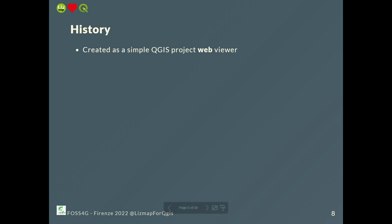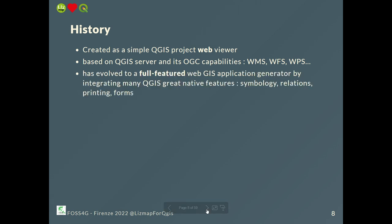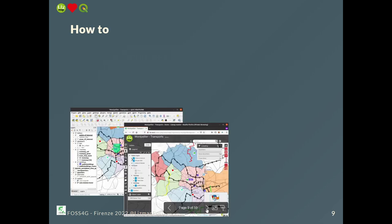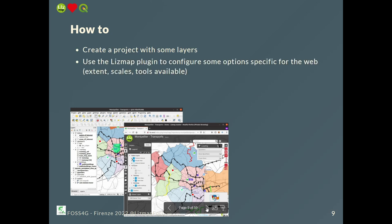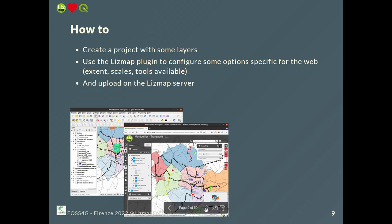This started as a simple QGIS web viewer, but we were adding more and more features — using WMS, WFS, WPS, et cetera. Now LizMap has a lot of features by using many QGIS native features like symbology, relations, printing, and forms. You create your project, use the LizMap plugin to configure some specific options for the web, and you already have your project on the web. On the screenshot on the left it's QGIS desktop, and on the right it's the same project but in your web browser.